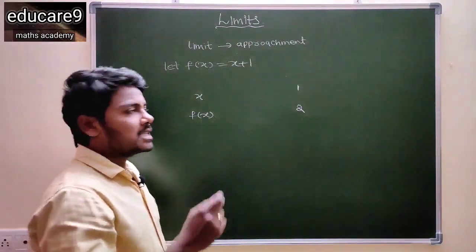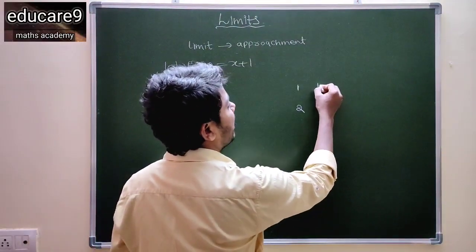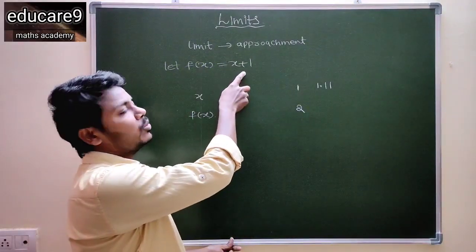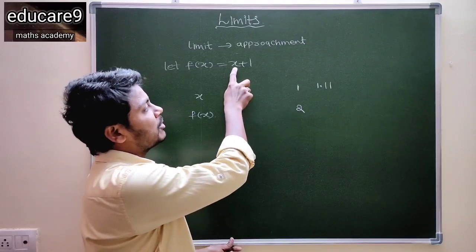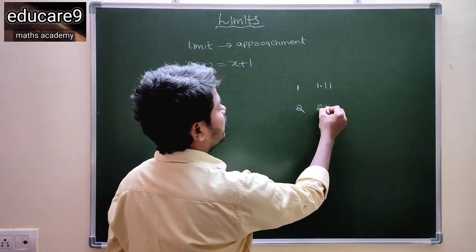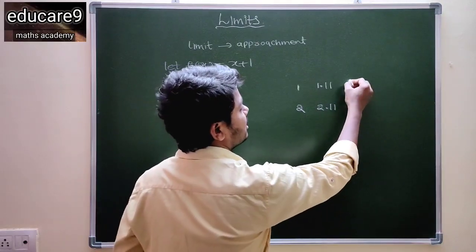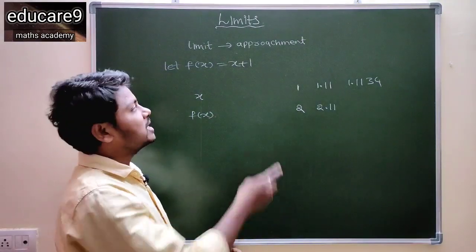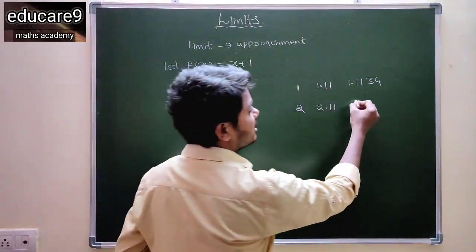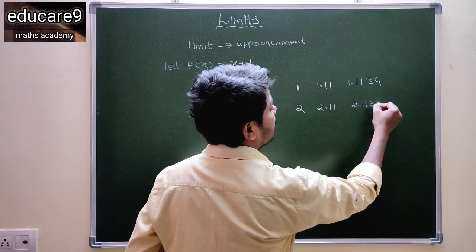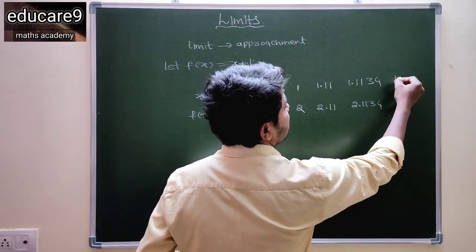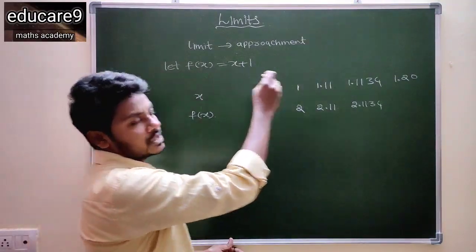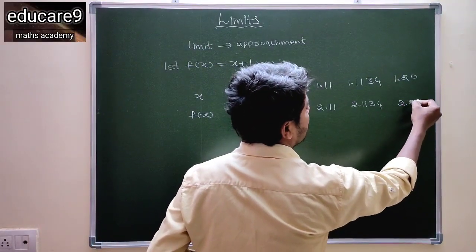For example, if x is equal to 1.11, then what is f of x value? That is 1.11 plus 1, we get 2.11. For example, if x is 1.1134, then f of x value is 2.1134. For example, if x is equal to 1.20, then f of x value is 2.20.